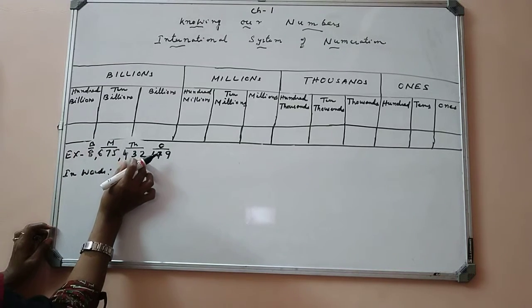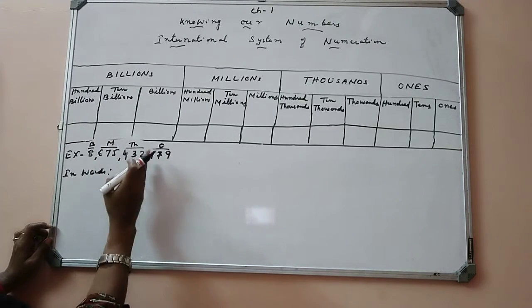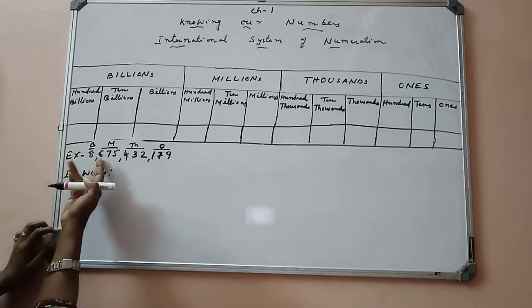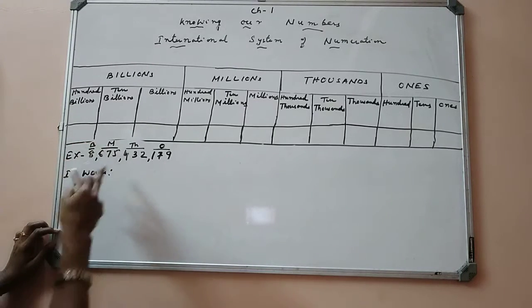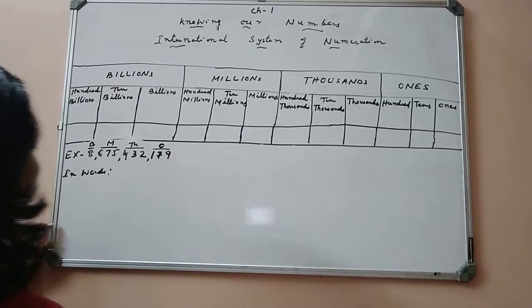Now in thousands group, we have three digits. So let us read the number: 432 thousand, and then 179. So, 8,675,432,179.